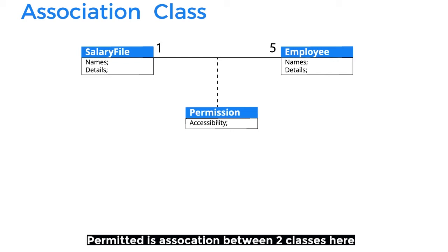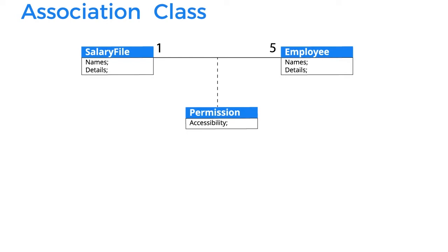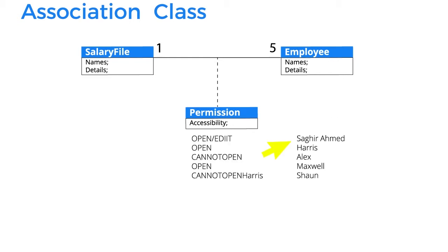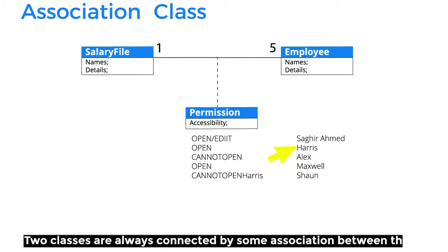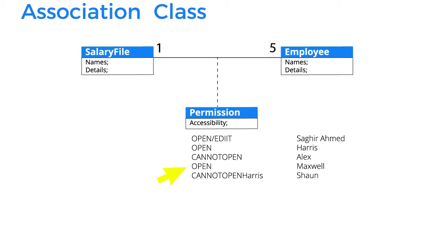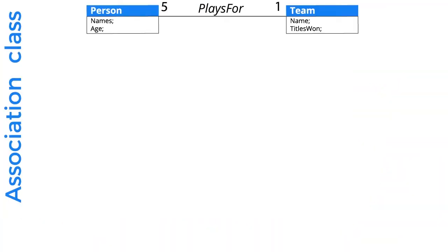Here, permission is another class made with the property of accessibility. We can also show the participants of the related classes — Sagina, Harris, Alex, Maxwell, and Sean have different accessibility permissions. The permission remains the link or association between salary file and employee class, but it is shown in a different way with a dotted line, because now the association also contains its own properties.